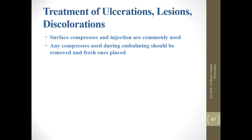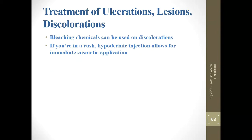What happens if you have an open wound, ulcer, lesion, or surface discoloration? For the most part, we're going to use supplementary embalming procedures — the surface compresses and injection. Any compress used during embalming should be removed; place a fresh one once you are done with arterial injection during your final washing and drying. Bleaching chemicals can be used on discoloration; in a rush you can go in with the hypo and put the bleaching chemical in directly. Understand that any bleaching effect is only temporary — it will lighten a bruise but will not make it go away.